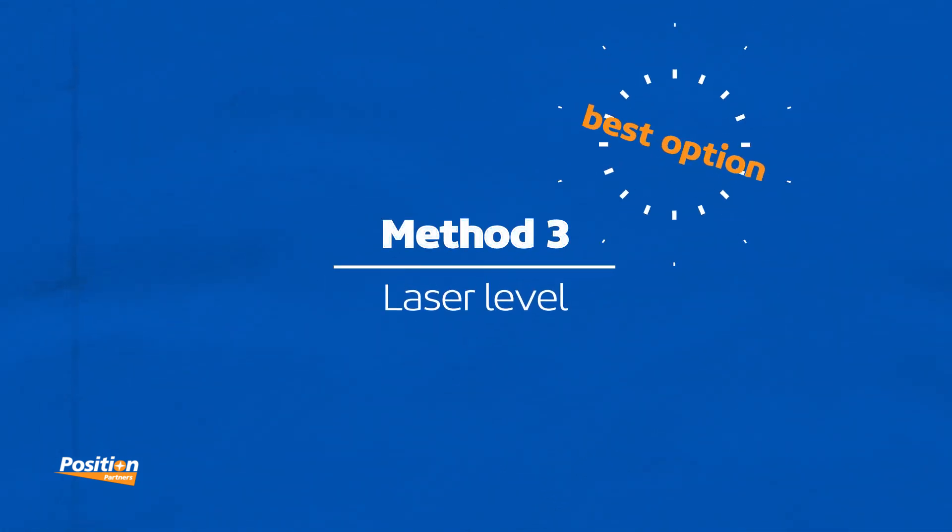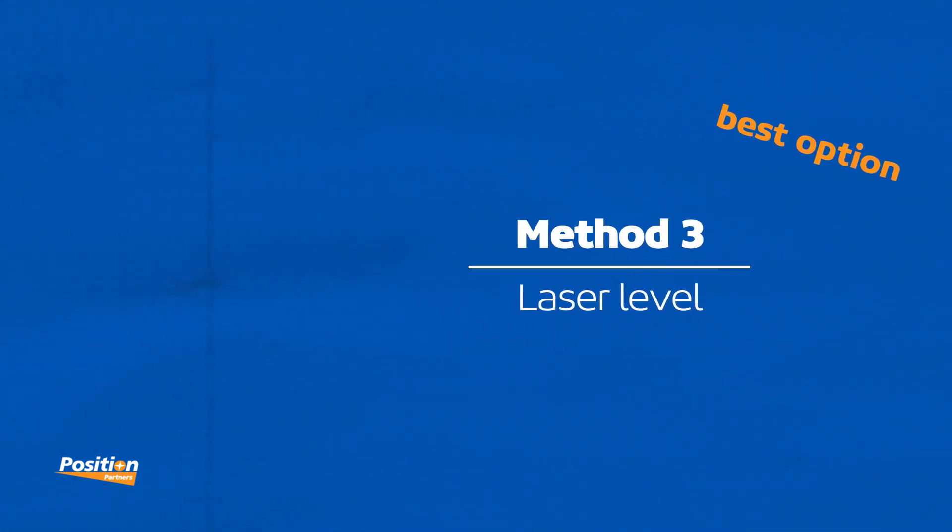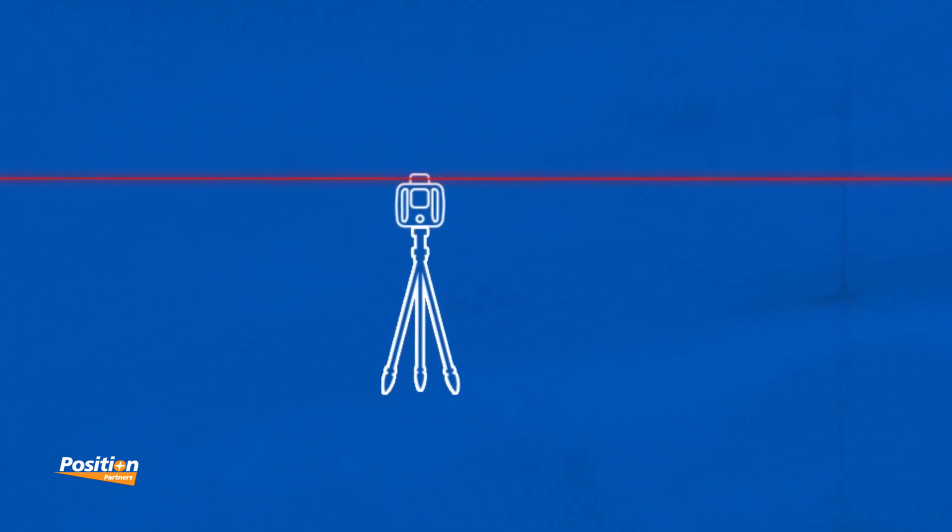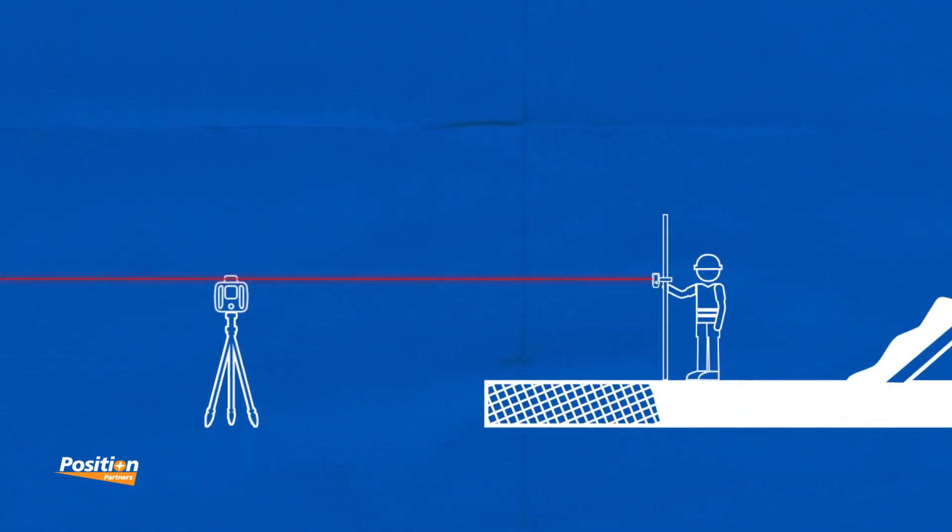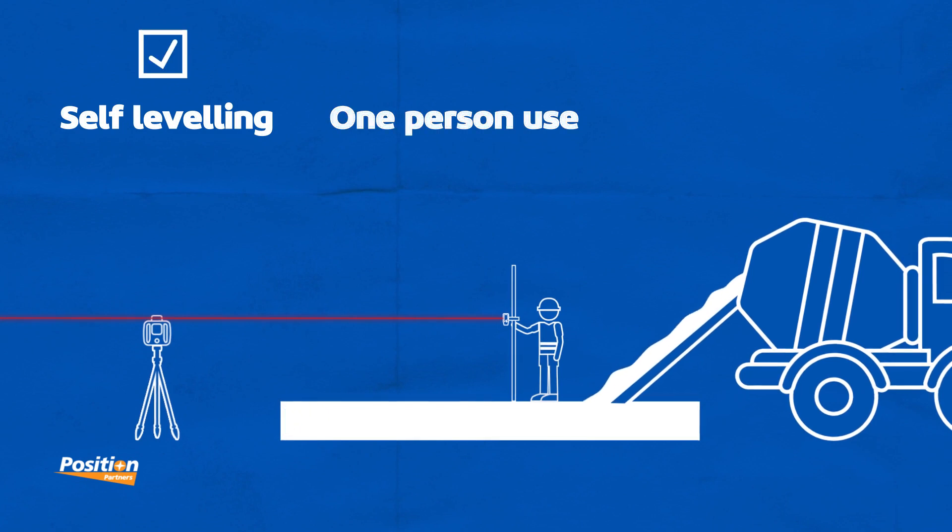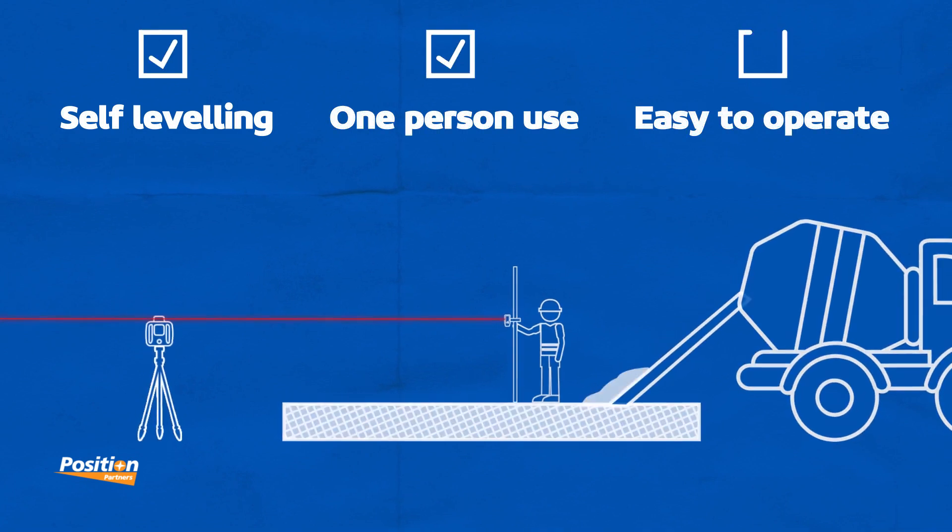Laser levels are easily the most accurate, versatile tool for modern construction sites. They send out a precise beam of light that can be detected by a laser receiver or the human eye depending on the model you use. They level by themselves, eliminate manual readings, and are very easy to operate.